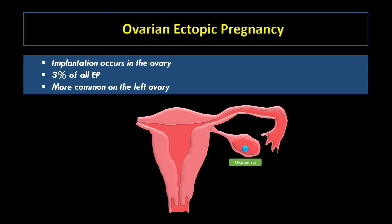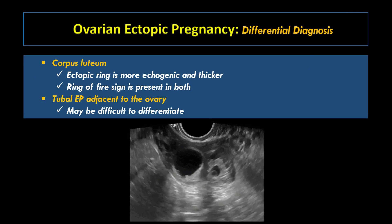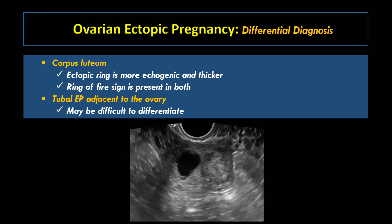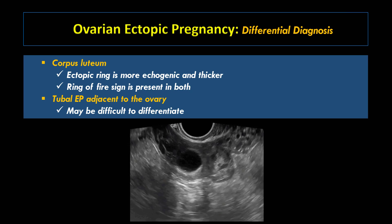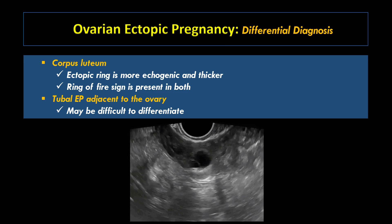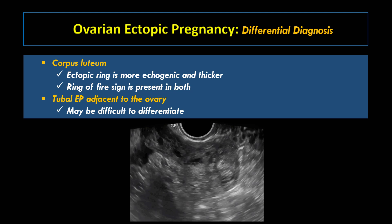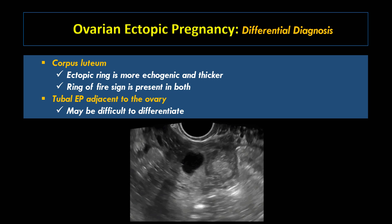In ovarian ectopic pregnancy, implantation occurs in the ovary, accounting for about 3% of all ectopic pregnancies. For an unknown reason, it is more common on the left ovary. On ultrasound, there is a cystic structure with an echogenic ring on the ovary; the ovarian cortex is seen around the ectopic gestational sac; the uterus is empty and the fallopian tubes are normal with no internal sac. The differential diagnosis is corpus luteum — the ectopic sac shows more echogenic and thicker walls — and ring of fire sign is present in both. The other differential is tubal ectopic pregnancy adjacent to the ovary, where it may be difficult to differentiate. As seen in this case, there is an ectopic gestational sac with thick and echogenic walls adjacent to the ovary, confirmed at surgery as a tubal ectopic pregnancy.